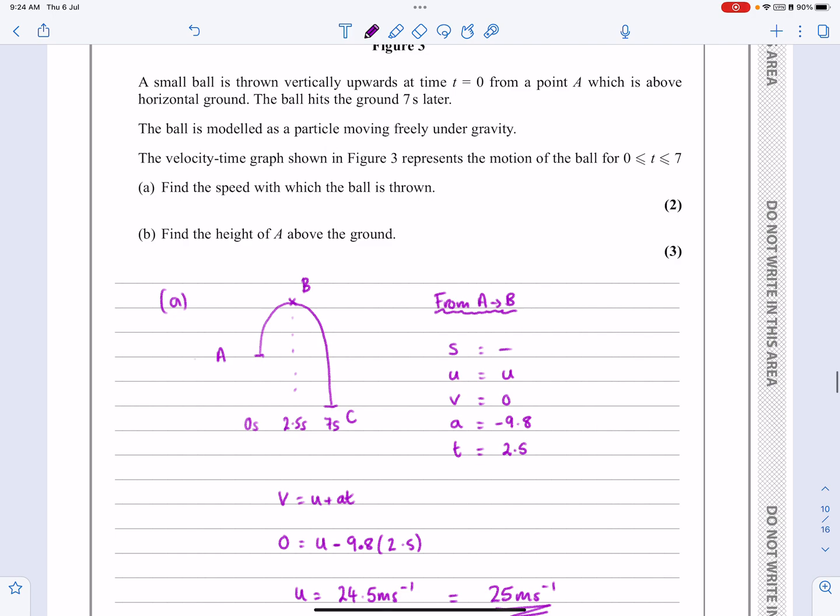So the second part says, can we now work out what this height here is going to be? So in order to do that, what I'm now going to consider is this as being my journey from A to C here. If I do that, I can still use the same U that I've just found. I can still use the same acceleration. I'll use T as being 7 seconds.